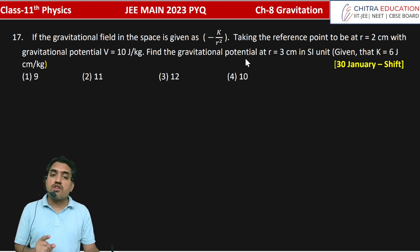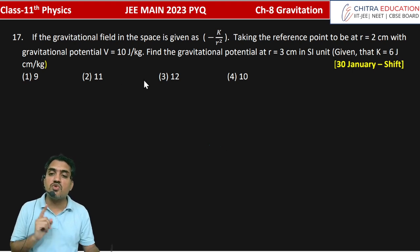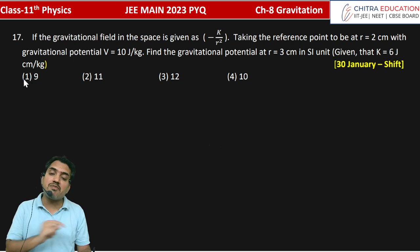Find the gravitational potential at R equal to 3 cm in SI unit, given that K is equal to 6 joule per kg.